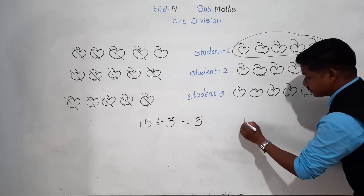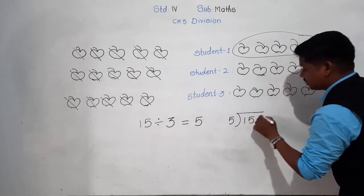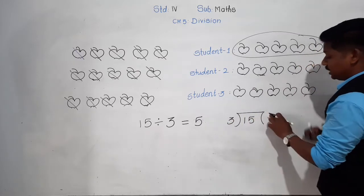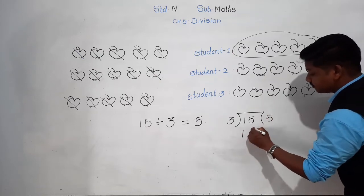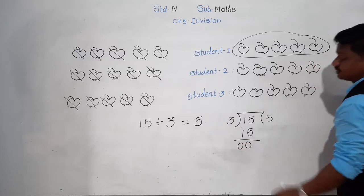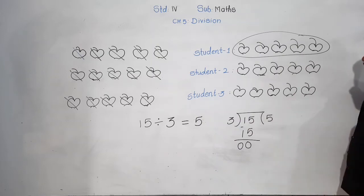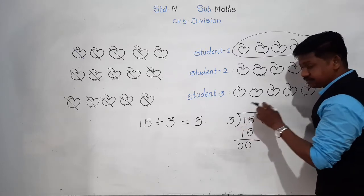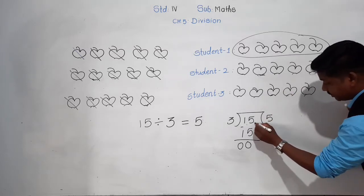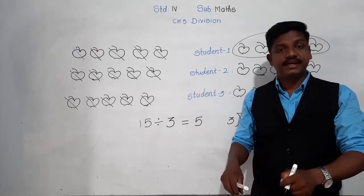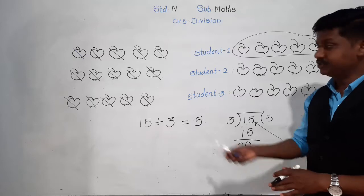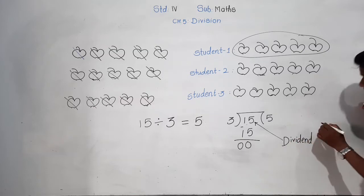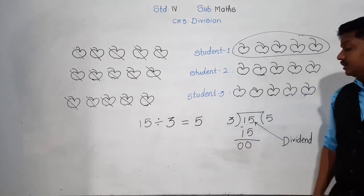This can also be written as 15 divided by 3 equals 5, because 3 fives are 15. Now, 15 is the total number of apples — the number which we have divided. The number which we divided is called the dividend. So 15 is called the dividend.